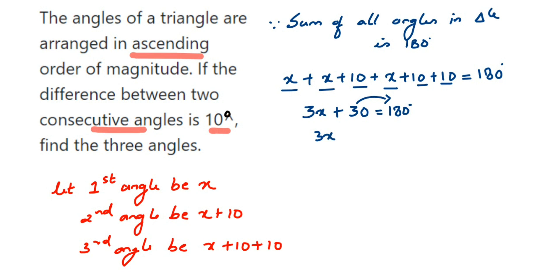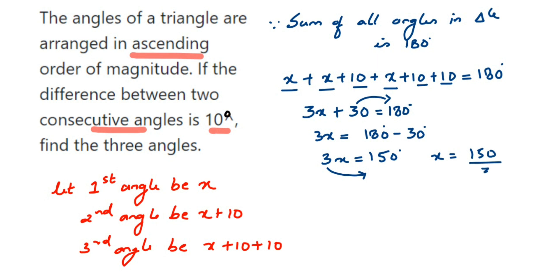We transpose 30 to the other side — since it's positive, it becomes negative: 180 minus 30 equals 150. So 3x equals 150. To find x, we transpose 3 to the other side: x equals 150 divided by 3, which gives x equals 50.